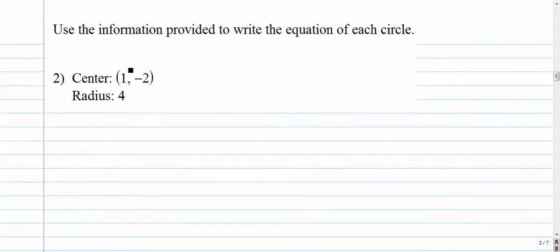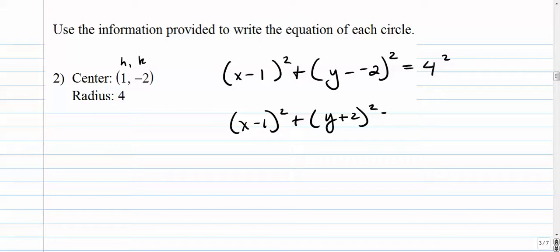Number 2. Alright, so now we're given that the center is 1, negative 2, and the radius is 4. So we set up our circle equation. The circle equation always starts with this shell. And this is, remember, h, k. So x minus h, y minus k is equal to the radius squared. 4 squared. Alright, so that's just going to stay the way it is. This guy has a double negative, so we'll change that to a positive. And this is 16. And that's it. Really simple.